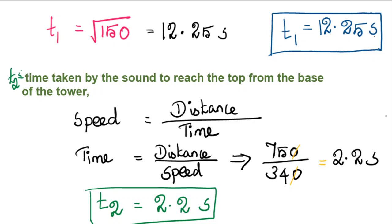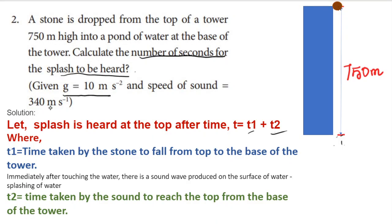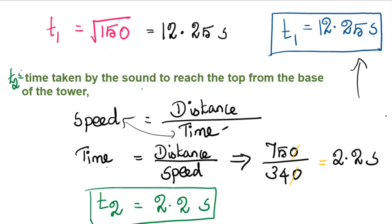For the second part, we calculate T2 — the time taken by the sound to reach the top from the base of the tower. We use the formula: time = distance ÷ speed. The distance is 750 meters and the speed of sound is 340 m/s. So T2 = 750 ÷ 340 = 2.2 seconds.